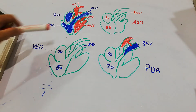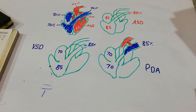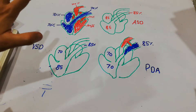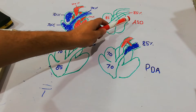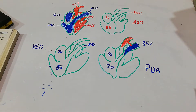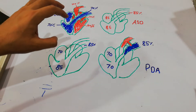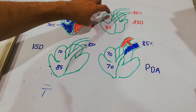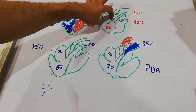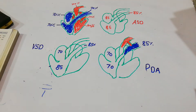The aorta takes blood to the body and the pulmonary artery takes blood to the lungs for oxygenation. In different types of congenital anomalies, there is mixing of blood. First, we will discuss ASD — atrial septal defect. There is a defect in the septum between the right atrium and the left atrium; there is a gap between them.